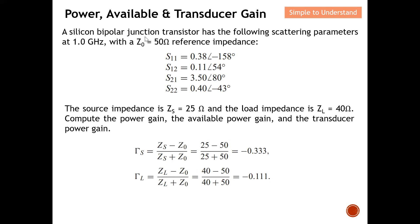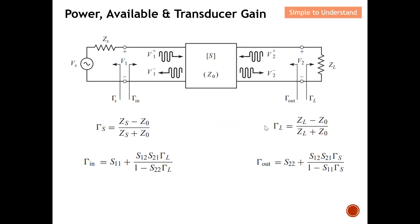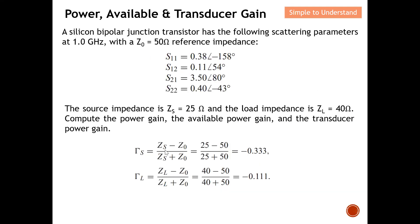For the example: a silicon bipolar junction transistor has the following S-parameters at 1 GHz with Z0 = 50 Ω. The source impedance is ZS = 25 Ω and the load impedance is ZL = 40 Ω. We are tasked to compute the power gain, available power gain, and transduction power gain. Since ZS = 25 and ZL = 40 are both smaller than Z0 = 50, the reflection coefficients will be negative.